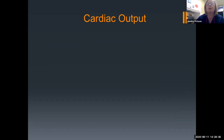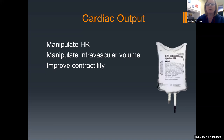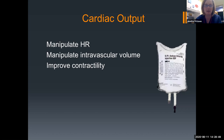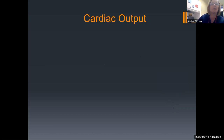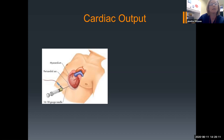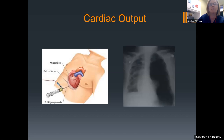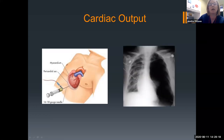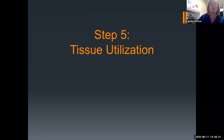Other issues with cardiac output in trauma: patients can get tension pneumothorax or a cardiac tamponade. This is part of your obstructive shock — we have to relieve that tension, whether it's around the heart or the lungs, in order to maintain or restore our cardiac output. Step five is tissue utilization. Everything else has worked — we've oxygenated, ventilated, have plenty of hemoglobin, our cardiac output is good. So oxygen has made it to the tissues. Now, can the tissues actually use it when it's delivered?